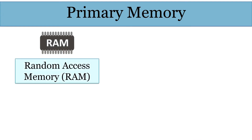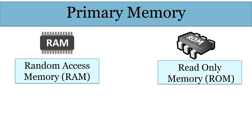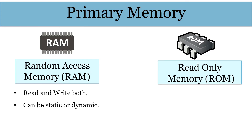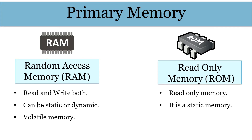The primary memory is further classified into two types: RAM, i.e. random access memory, and ROM, i.e. read only memory. RAM is both read and write memory. It can be static or dynamic and RAM is a volatile memory. On the other hand, ROM, i.e. read only memory, is static — its content cannot be altered — and it is a non-volatile memory.